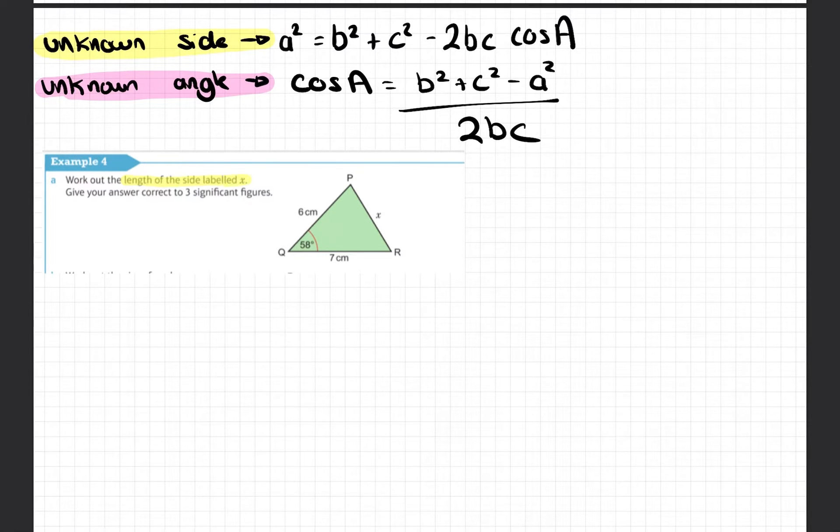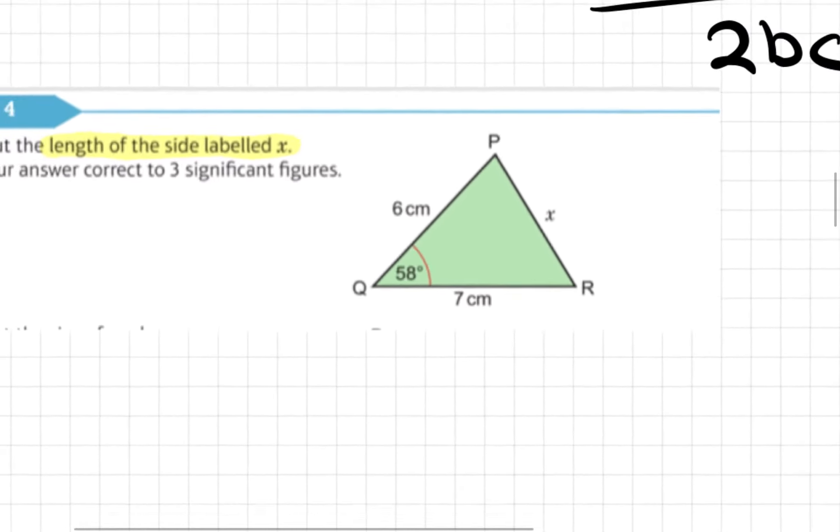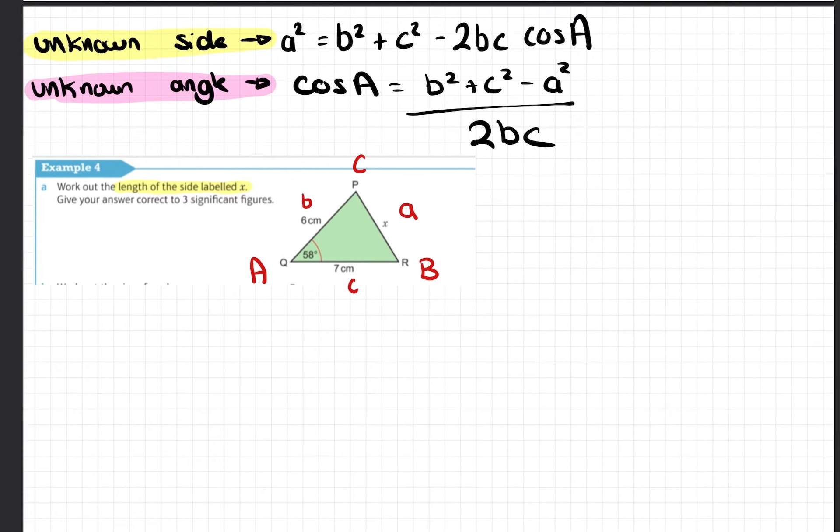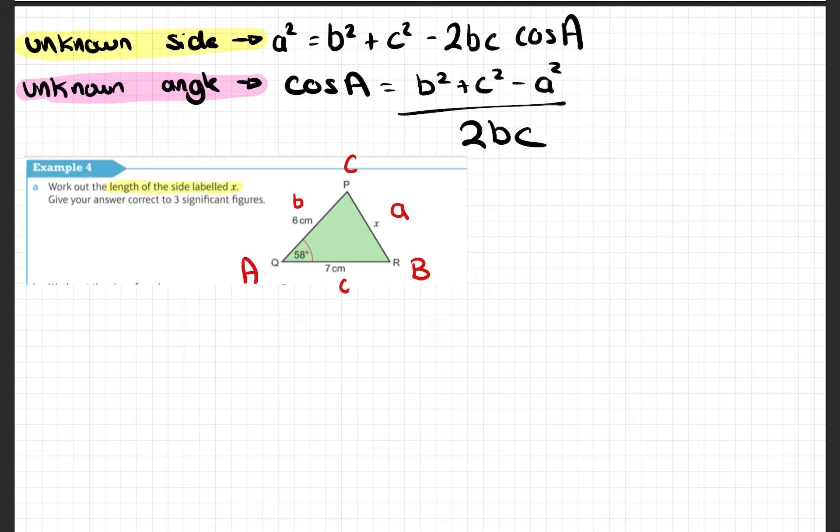We need to find the length of the side labeled X. So straight away it's an unknown side question. Because my rule states a squared, a being my unknown side, I'm going to call this a. So therefore that's angle A because it's opposite.